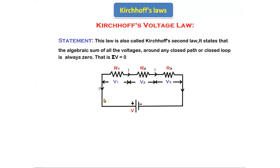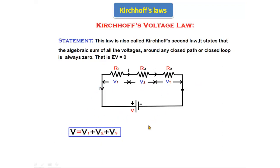If we take one circuit, this circuit consists of three resistors connected in series. There is a supply voltage source V. The voltage across R1 is V1, the voltage across R2 is V2, and the voltage across R3 is V3. If we apply KVL to the above circuit, we will get V equals V1 plus V2 plus V3 — total voltage equals sum of the individual voltages. If we rewrite the equation, taking V1, V2, V3 to the left-hand side, we get V minus V1 minus V2 minus V3 equals zero. That is, the algebraic sum of all the voltages in a loop is equal to zero. This is the equation of KVL, Kirchhoff's voltage law.